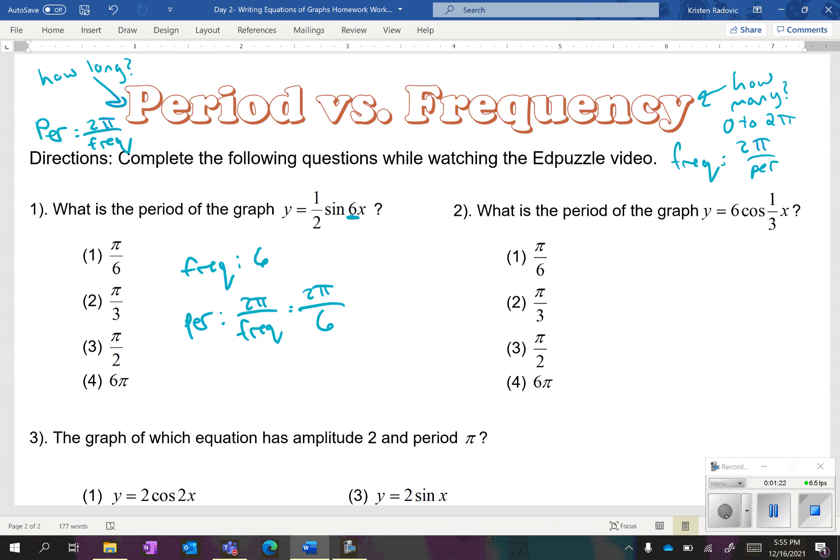Now, the thing that I like to say is if you know your frequency is six, your period is not going to be anything close to it, because you have to do two pi divided by it. So, if your frequency is six, don't choose the answer choice that says six. Not good. You do have to simplify this. Two divided by six is one-third. Include the pi. You're going to get choice two.